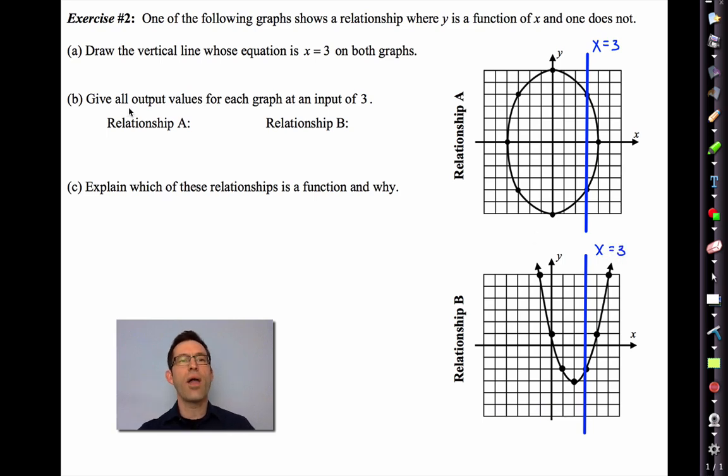Letter B says, give all output values for each graph at an input of three. Well, on A we have an output there, because that's at the point three comma four. And we also have an output here and that's at three negative four. So the outputs are negative four and four. Relationship B, there we had three comma negative two. So only negative two.